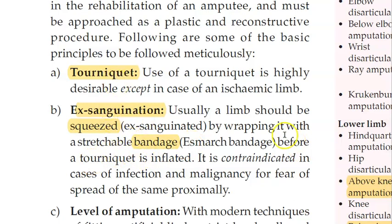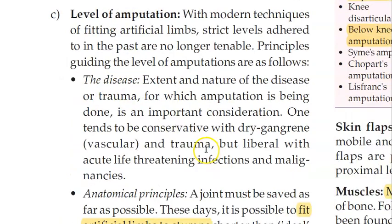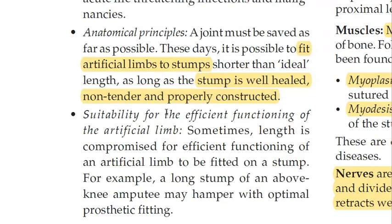Next, you decide at what level you want to amputate, based on the extent of disease, extent of damage, and extent of viable tissue. If you plan to fit a prosthesis, you must calculate how much stump length is required — leaving a stump that is too long can be problematic — so you need to plan the amputation level carefully.